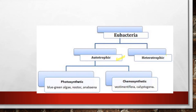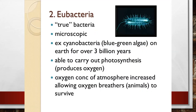On the basis of mode of nutrition, Eubacteria is classified under two categories: autotroph and heterotroph. Autotroph is in turn divided into two categories: photosynthetic and chemosynthetic. For photosynthetic, the main examples are blue-green algae called cyanobacteria — Nostoc and Anabaena. In the chemosynthetic category, you have Vestimentifera as well as Calyptogena.